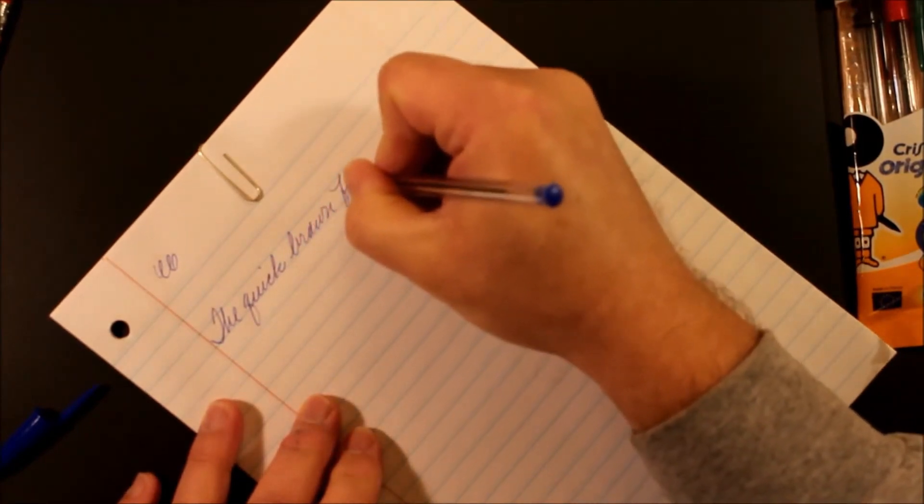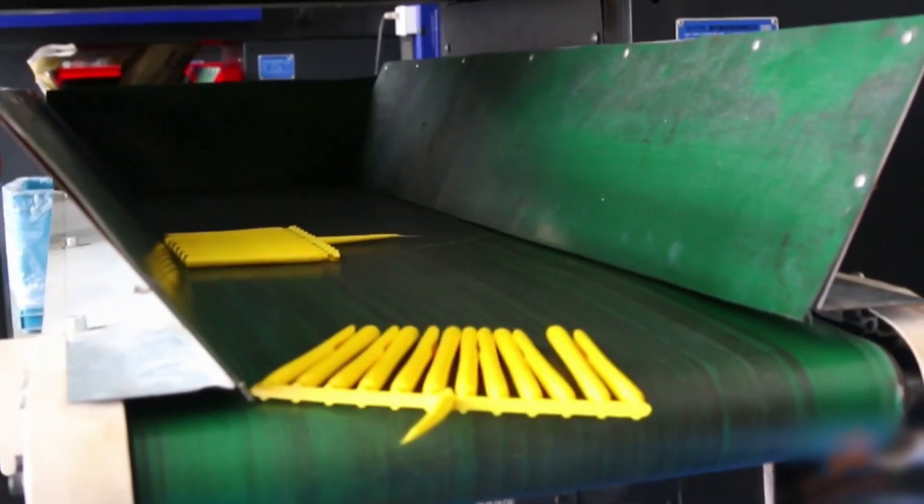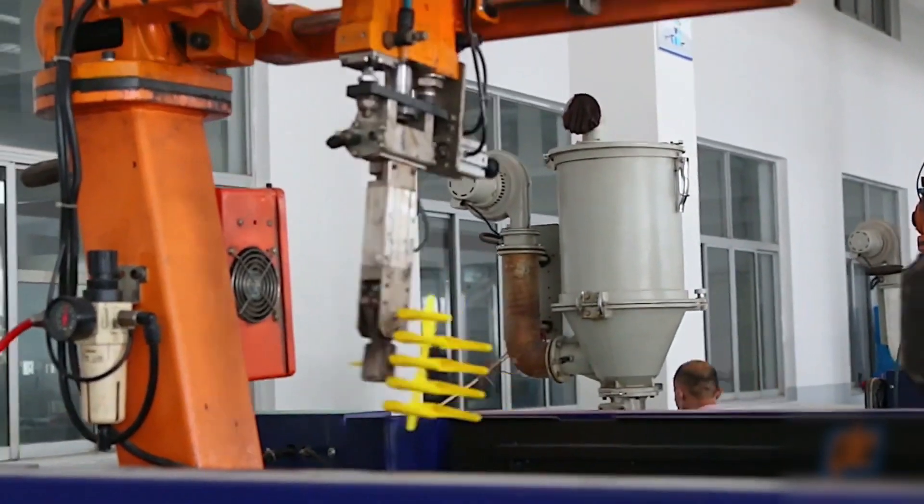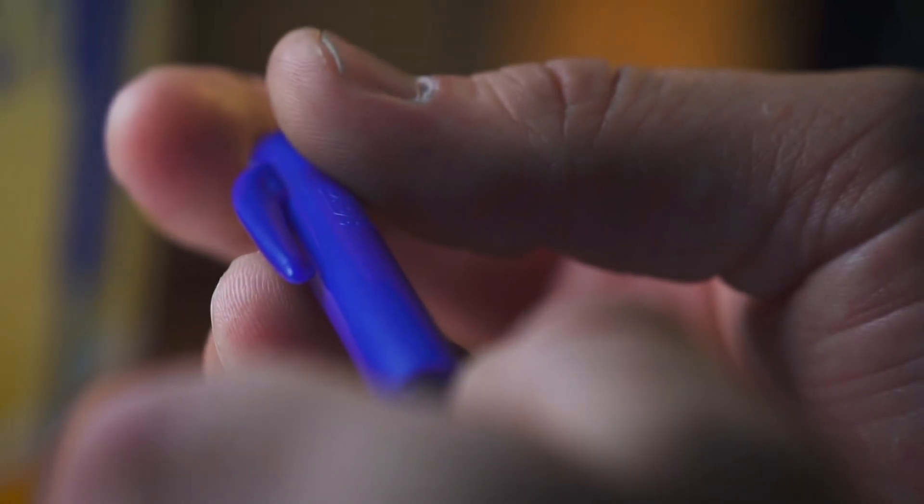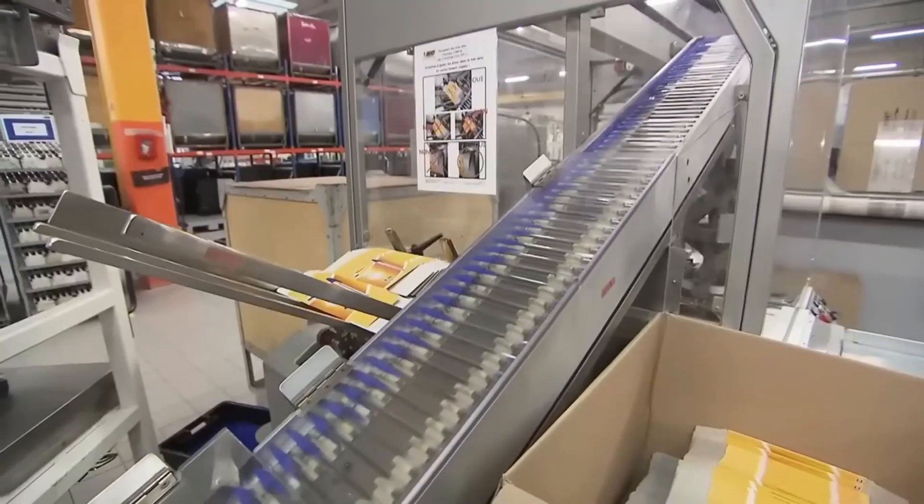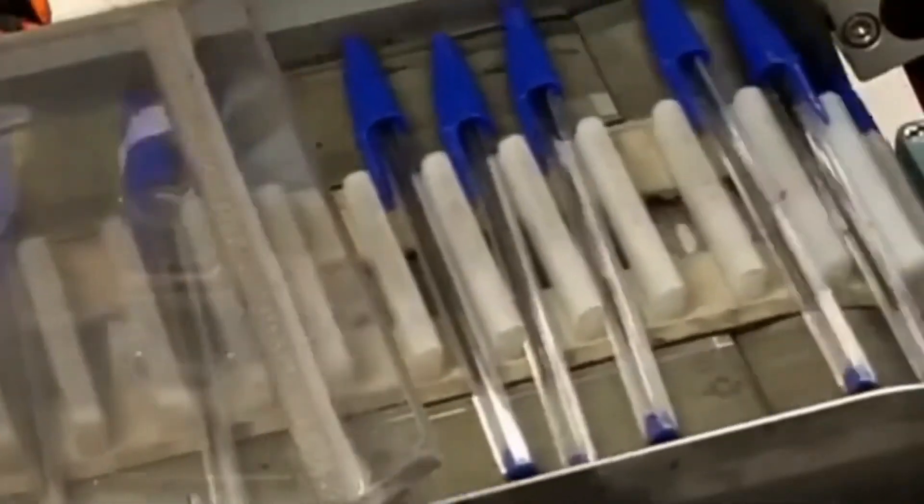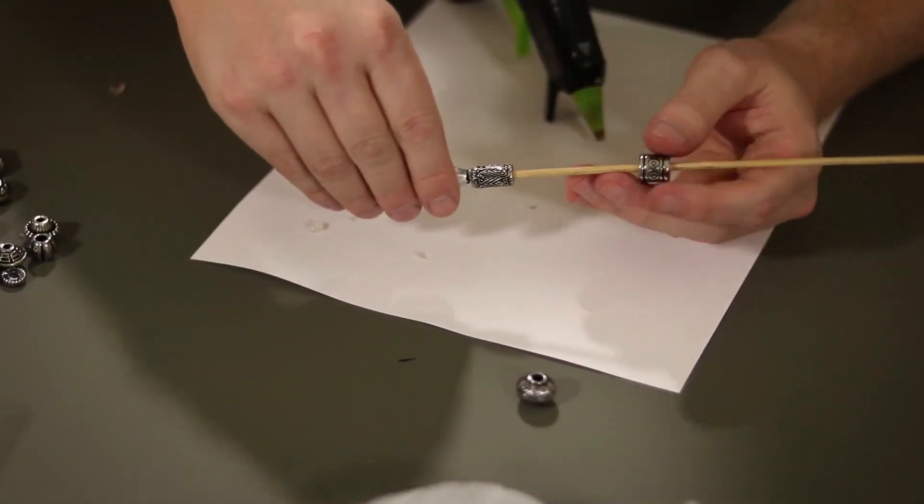The first step in making a ballpoint pen is forming its main parts, such as the barrel and the cap. This is done with a technique called plastic molding. Think of this as playing with a very advanced form of those play-doh presses where you pick a mold, press the dough through it, and the shape you want comes out. For making pens, there are two main ways to shape the plastic: extrusion and injection molding.